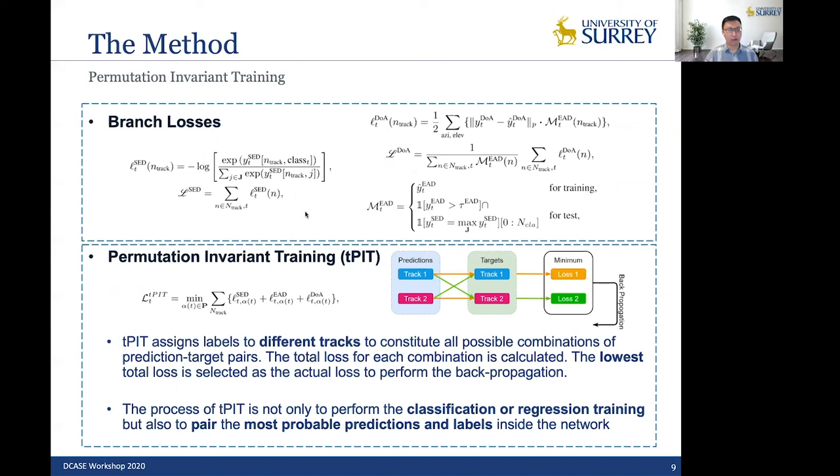It is a standard permutation invariant training. So for SED loss, we can use binary cross entropy or categorical cross entropy. It depends on the style of your SED output. And for DOA, we use the mask version of L2 loss. The mask here for training, we used the ground truth of EAD. But for the test, we can use the SED predictions or the intersections of SED prediction and EAD predictions.